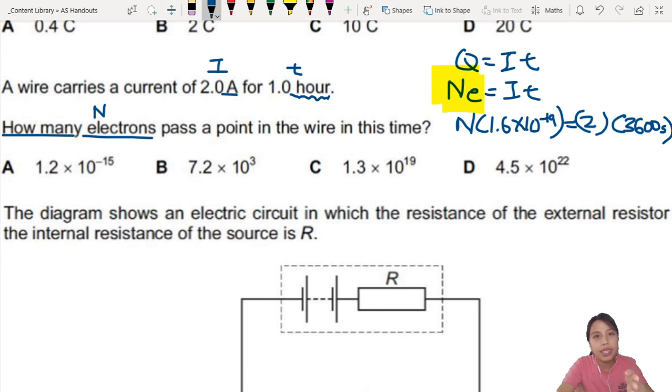So like one hour, 60 minutes. 60 minutes is how many seconds you times, times, times. Then you get N. That is the number of electrons. So you calculate. You get 1.6 times 19. And then you get 4.5 times 10 to the 22 electrons passing by a wire carrying 2A current for one hour.